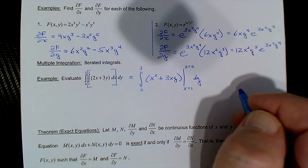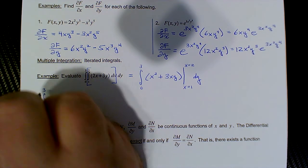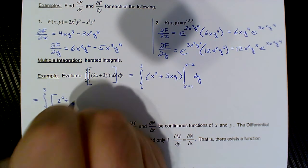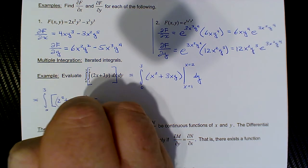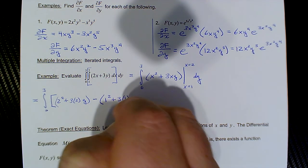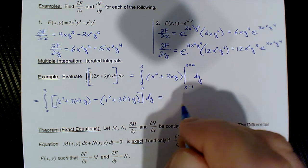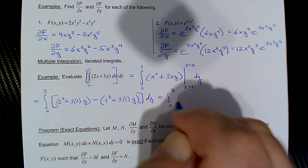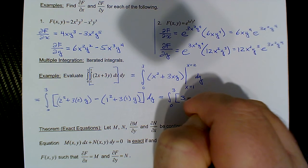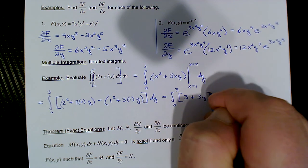After we're done evaluating that, we're going to integrate with respect to y. By the fundamental theorem of calculus, we get the integral from 0 to 3: the upper limit x = 2 goes in, giving us 2² plus 3·2·y, and then minus the lower limit x = 1 goes in, so 1² plus 3·1·y. Crunching things down, we get the integral from 0 to 3 of [4 − 1 + (6y − 3y)], which is 3 + 3y, with respect to y.